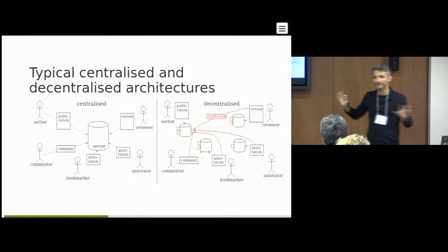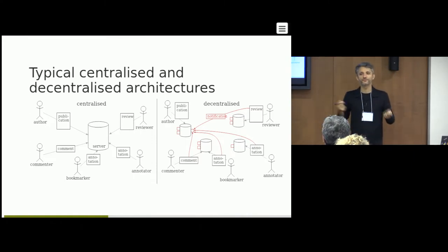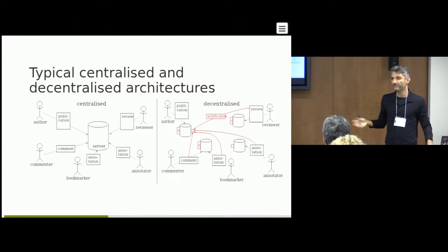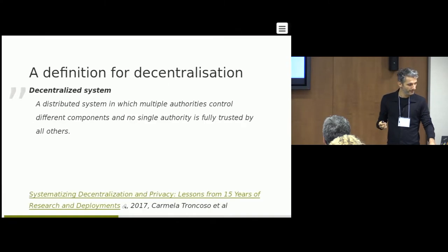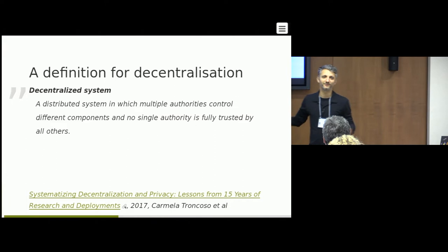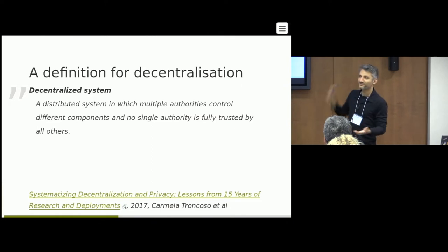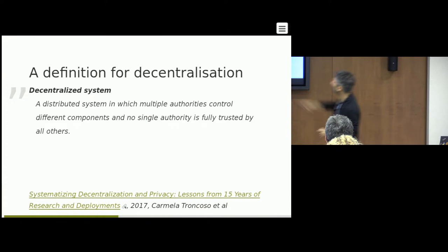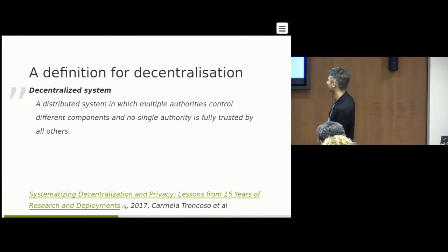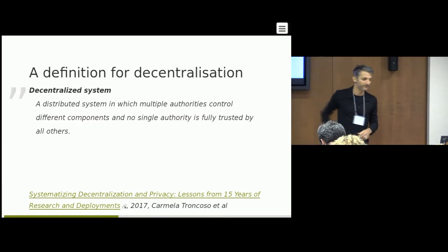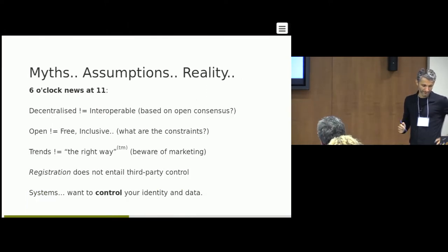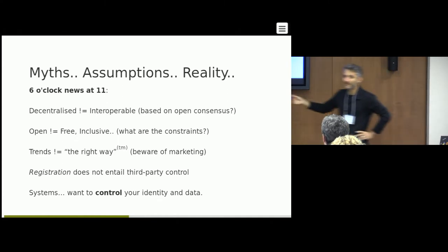The examples in the remainder of the talk will focus on a decentralized approach — the paradigm I hope you can consider integrating into systems, services, and tools you develop. Before going further, let's have a working definition of decentralization: a distributed system in which multiple authorities control different components and no single authority is fully trusted by all others. The key phrase is 'no single authority.' Just because something is decentralized does not mean it's interoperable.